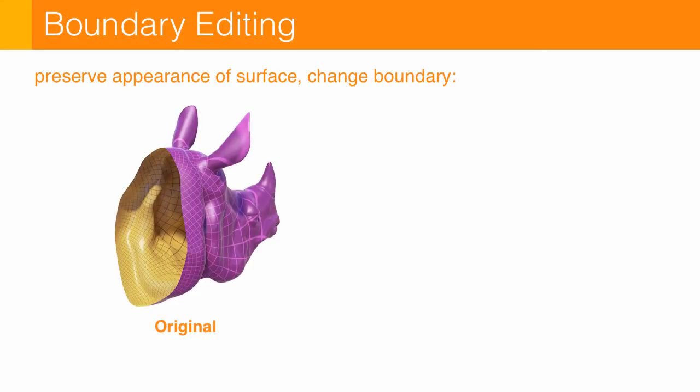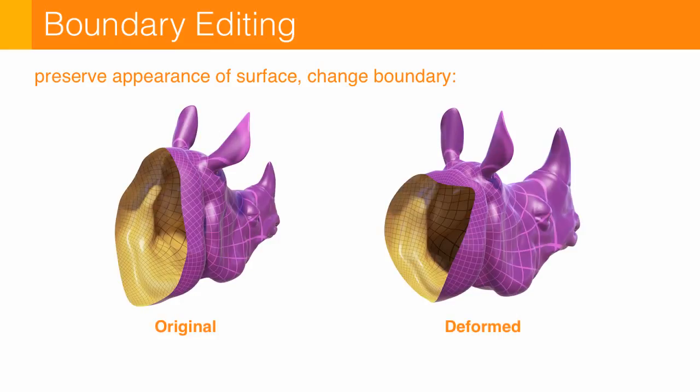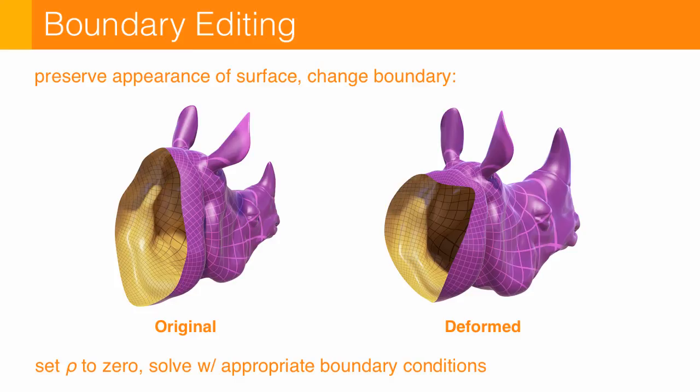Another cool thing we can do is we can preserve the appearance of a surface while modifying its boundary. So here we take this rhinoceros head and completely change the neckline while still preserving the way the ears and the eye and the horn look. And all we have to do here is set rho to zero, say that we don't want to change the curvature at all on the interior of the domain, and then solve with appropriate boundary conditions.